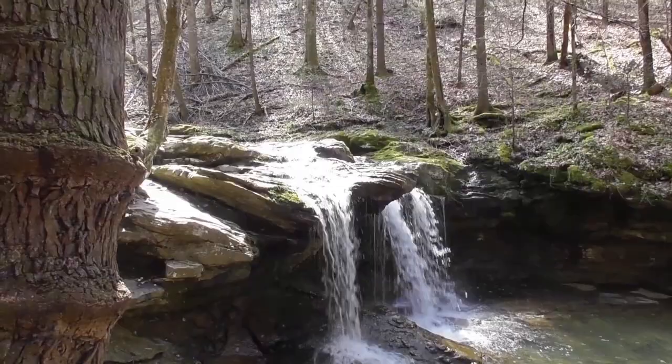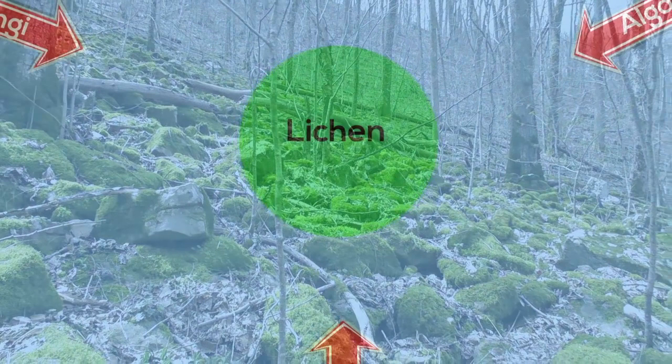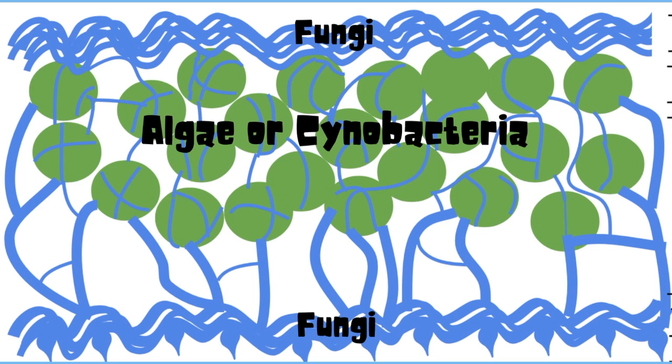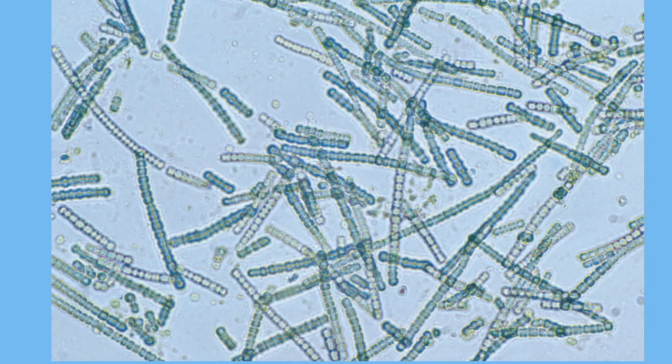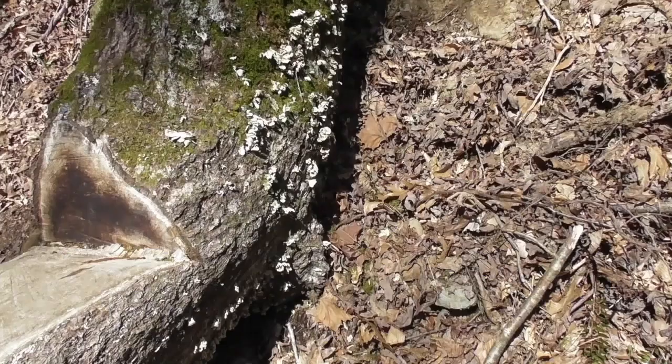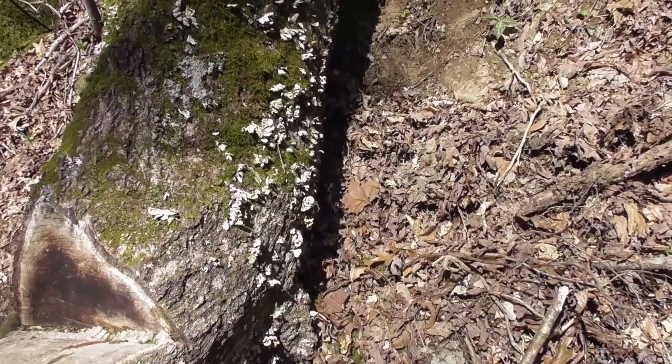Nestled among the trees, the rocks, the moss, and the water is an often overlooked but amazing organism — and that is lichen. A lichen is a composite organism which is the result of algae or cyanobacteria living among the filaments of multiple fungi species in a mutualistic relationship. Cyanobacteria is a type of bacteria that can obtain their energy through photosynthesis, and they are the only prokaryotes able to do this.